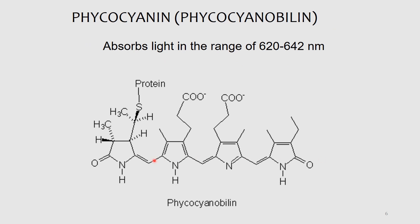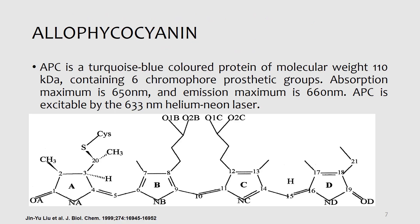Here is the structure of allophycocyanin, or APC, which is a turquoise blue color pigment. It has a protein of molecular weight 110 kilodaltons and contains six chromophore prosthetic groups. The absorption maximum is 650 nanometers and emission maximum is 660 nanometers. APC is excitable by 633 nanometer helium-neon laser light. The structure is quite complicated as compared to the rest of the phycobiliins.